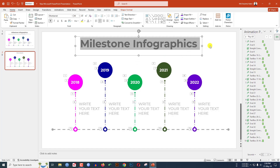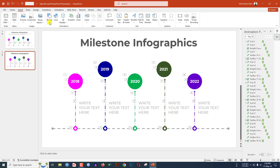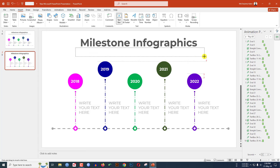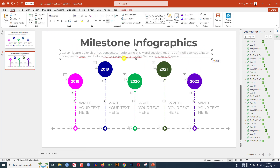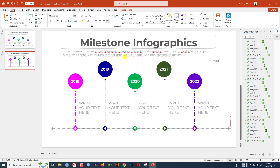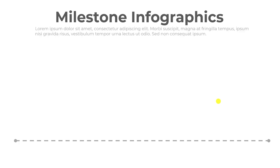Increase the font size. Again go to Insert, go to Shape, pick another text box and drag it over here. Insert some description text. Now let me watch the slideshow.